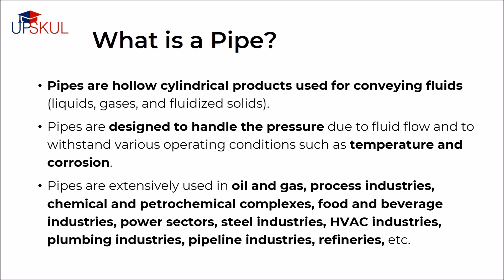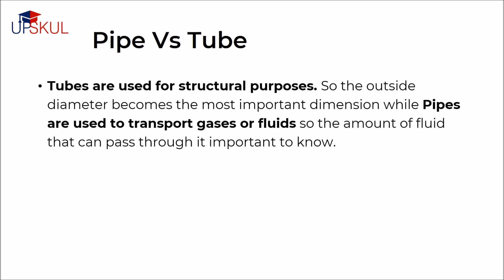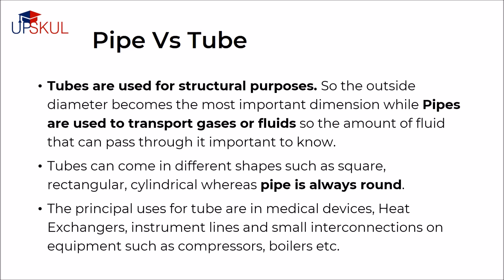In normal life, we might use the terms pipe and tube interchangeably, but in engineering and industry, the terms are uniquely defined. Tubes are used for structural purposes, so the outside diameter becomes the most important dimension, while pipes are used to transport gases or liquids, so the amount of fluid that can pass through it is more important. Tubes can come in different shapes such as square, rectangle, and cylindrical, whereas pipe is always round. The principal uses for tubes are in medical devices, heat exchangers, instrument lines and small interconnections on equipment such as compressors and boilers.